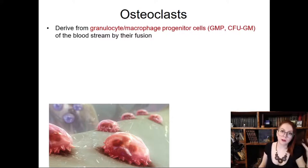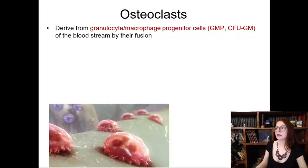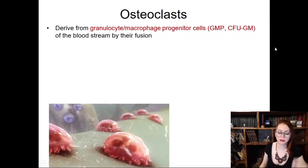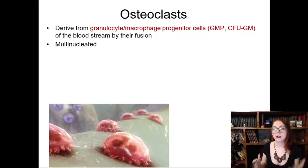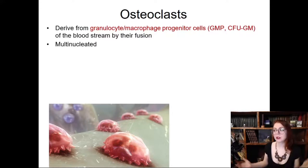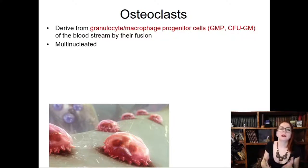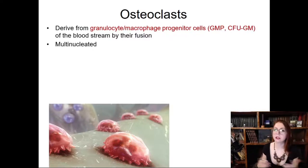Osteoclasts are unusual in that they are not residents of bone tissue — they derive from the bloodstream, specifically from granulocyte-macrophage progenitor cells. Moreover, they are multinucleated, which is necessary because they need to resorb a very hard and stiff extracellular matrix. Many cells must fuse to expel sufficient lysosomal enzymes into the extracellular space to resorb bone tissue.